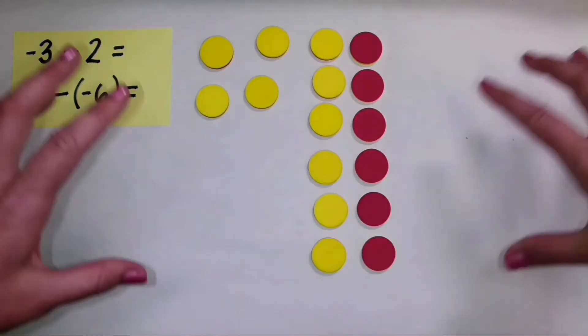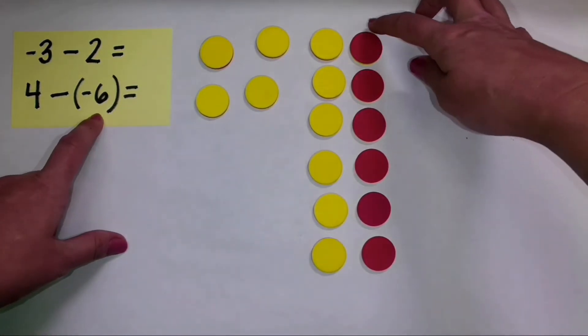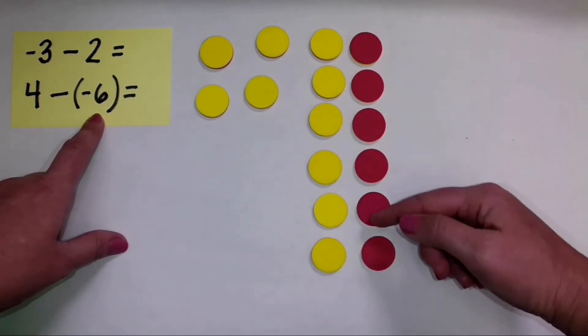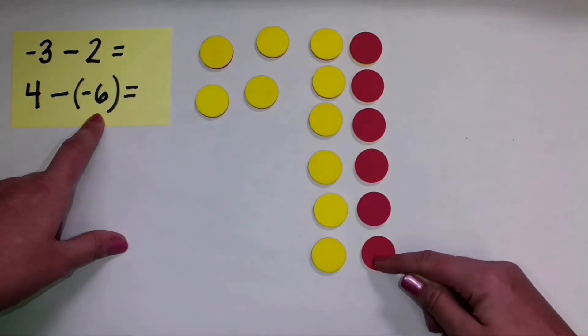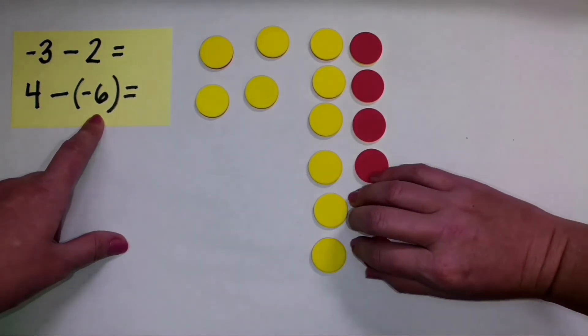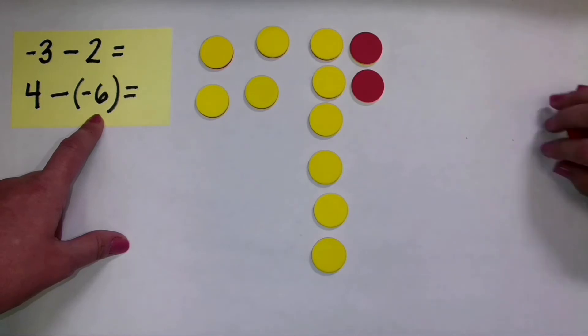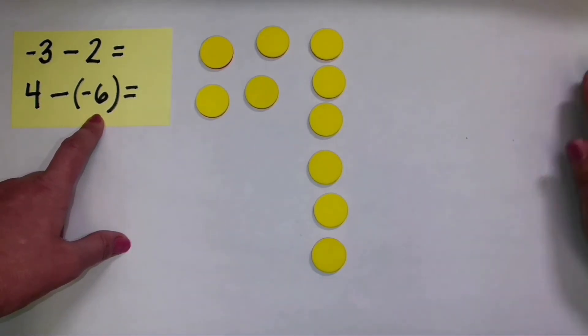So now we have a lot of counters up here. But I can see that I have one, two, three, four, five, six negatives that I can take away. So I'm going to subtract those by moving those off of my workspace right here.